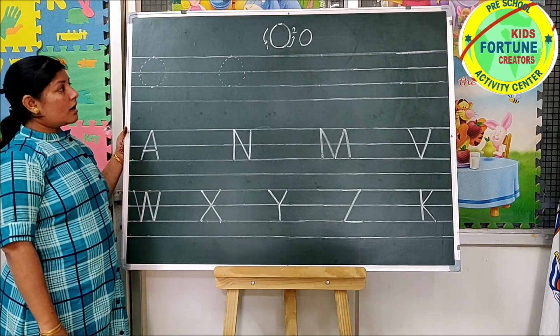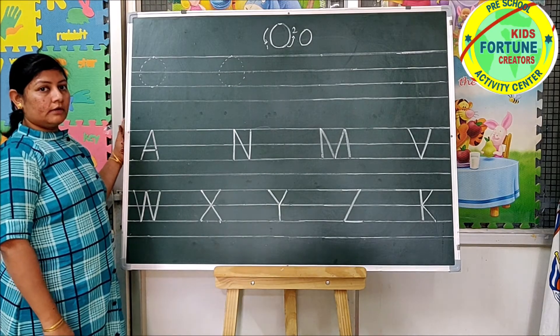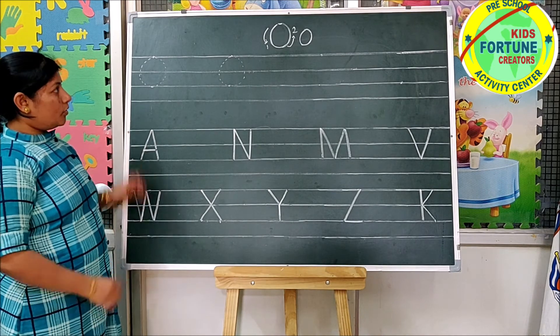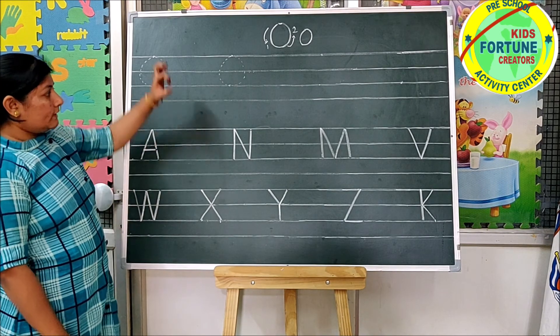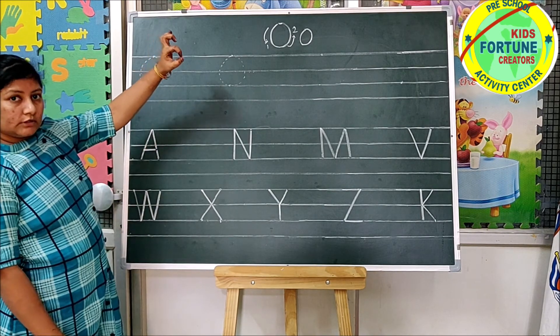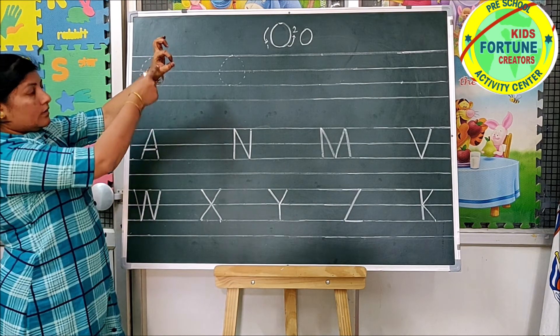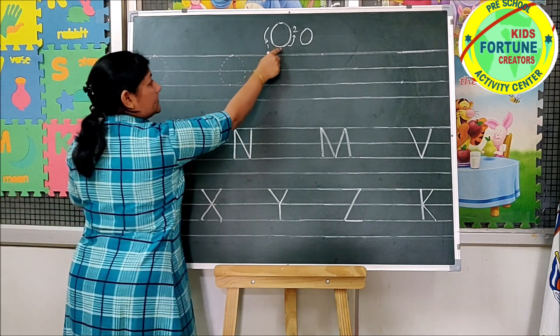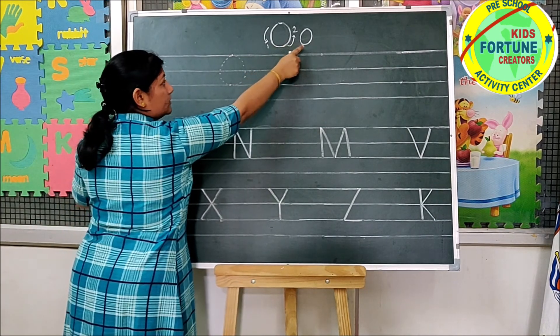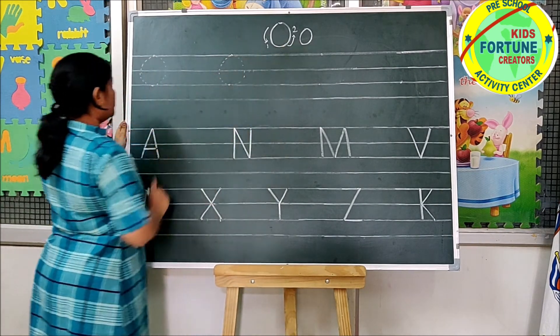Now we will learn how to make letter O. The formation of O is a circle — round and round. This is capital O. This is small O.